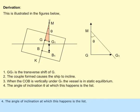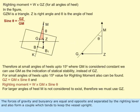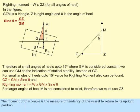The angle of inclination at which this happens is the list. The forces of gravity and buoyancy are equal and opposite, separated by the righting lever, and also form a couple which tends to keep the vessel upright. The moment of this couple is the measure of the tendency of the vessel to return to its upright position. It is called the righting moment or the moment of statical stability.